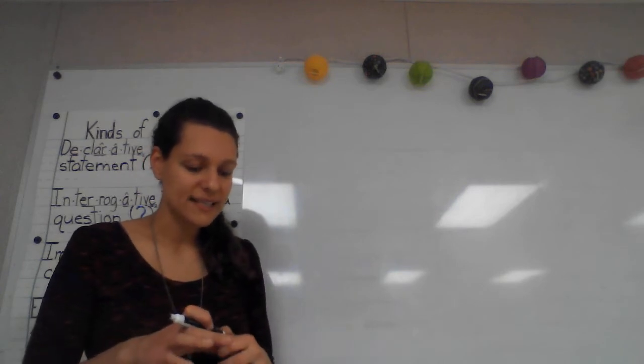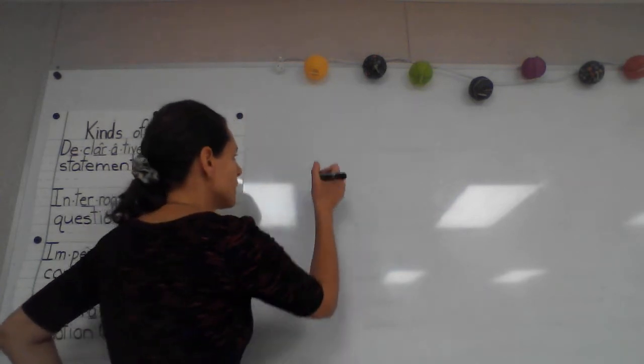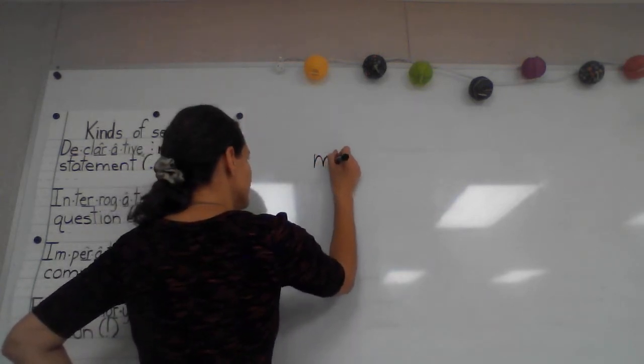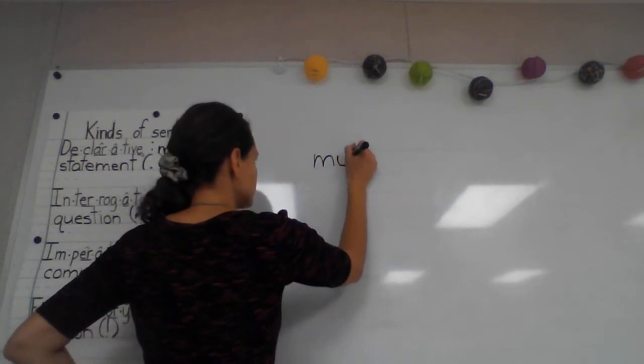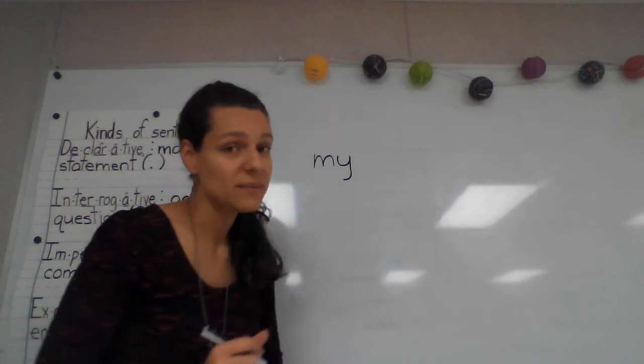Alright, class, what did you write to spell my? Good, M-I, which I? Good, Y. And I-E, English words don't end with I.